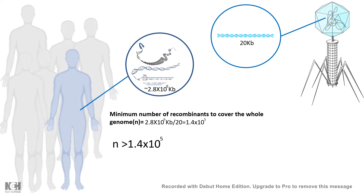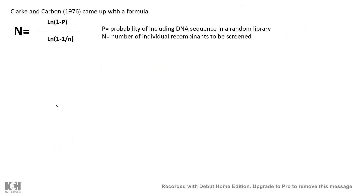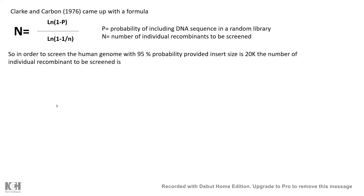The number is actually more than that minimum, because some fragments would be over-represented and some under-represented, so to ensure full coverage we need to screen even more colonies. Clark and Carbon came up with a formula — simple yet elegant — calculating the number of individual recombinants to screen based on a probability P, defined as the probability of including a DNA fragment in a random library.